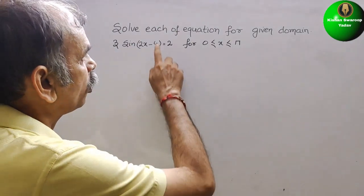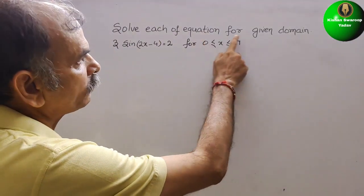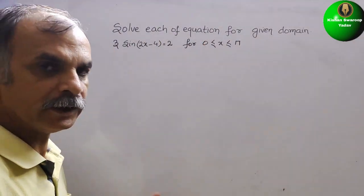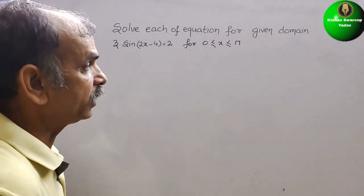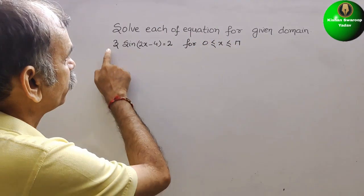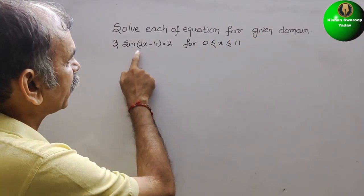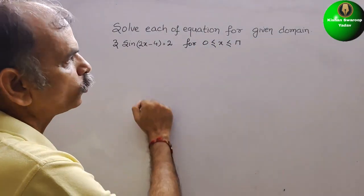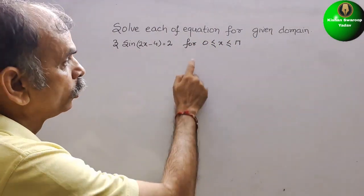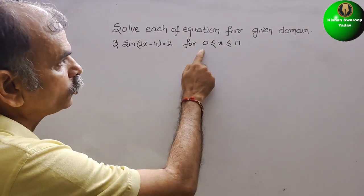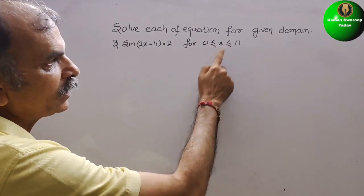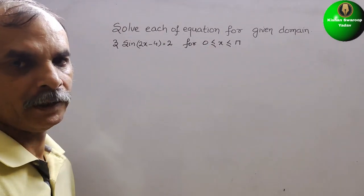The question is to solve each of the equations for a given domain. They have given 3sin(2x - 4) = 2, for 0 ≤ x ≤ π.